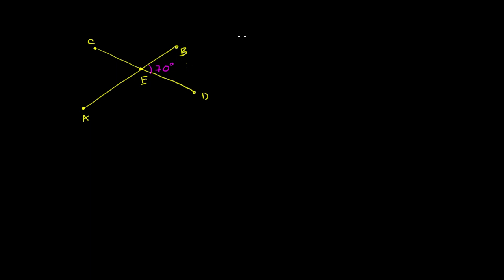The first thing you might notice when you look at this: I've already told you that this is a line segment, and that this is a line segment. You see that angle BED and angle CEB are adjacent. And we also see that if you take the outer sides of those angles, it forms a straight angle.